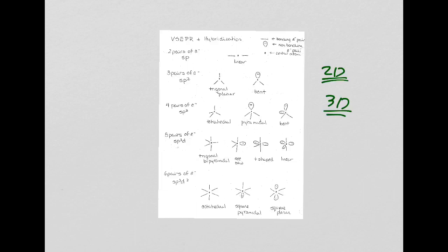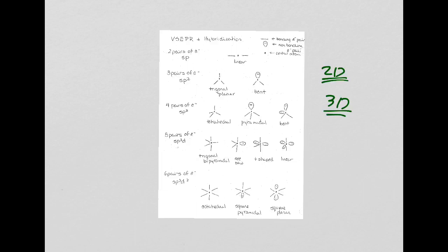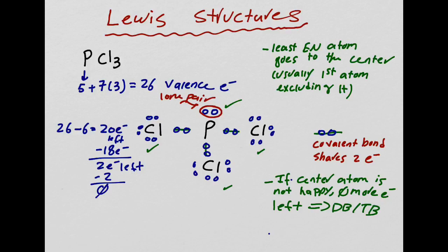Let's go back to phosphorus trichloride. The center atom has three bonds attached to it and a lone pair — two non-bonding electrons on the center atom. A lone pair means those electrons are not involved in a bond. Look at the geometry handout: with one center atom, one lone pair, and three bonds, the geometry for PCl3 is pyramidal.